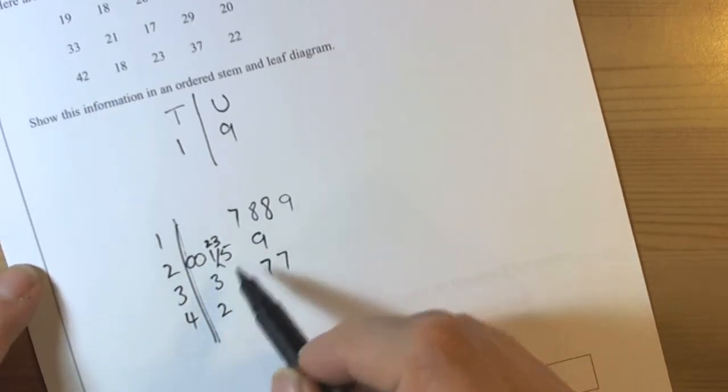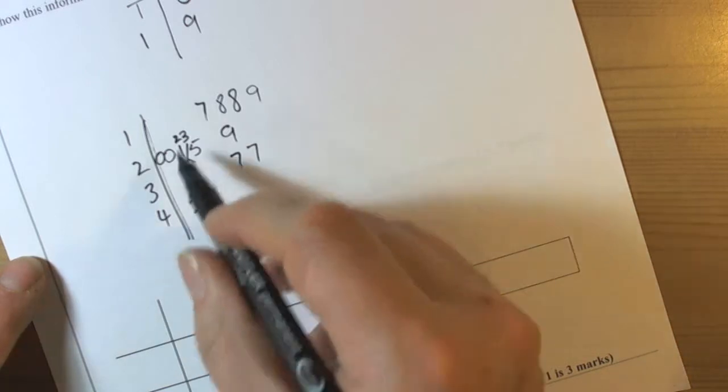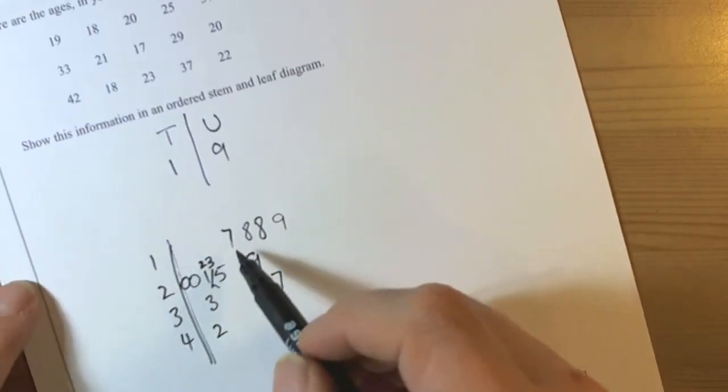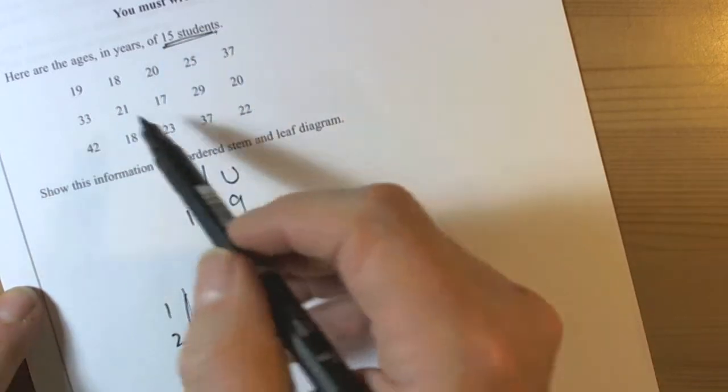So we've got the unordered table there in the center. Always try and put it into some form of order to start with, and then we can go through. Obviously we should check that we've actually got the same number of numbers as they said in the question. They said there were 15 students, so we should be checking that we've got 15 digits on the unit side here.